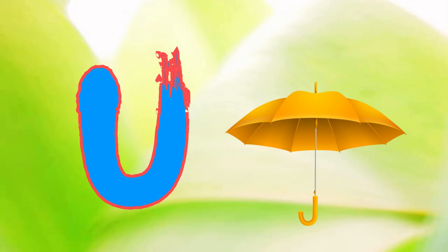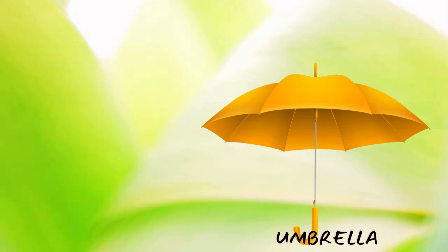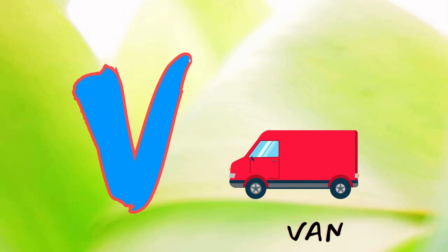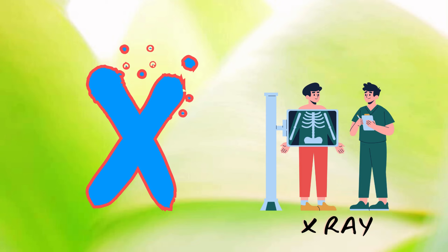U is for Umbrella. V is for Van. W is for Window. X is for X-Mas.